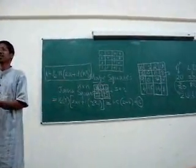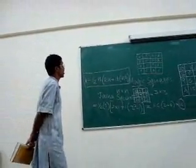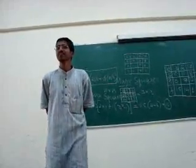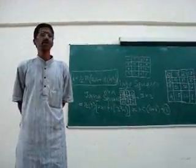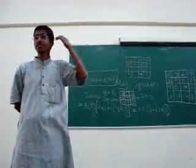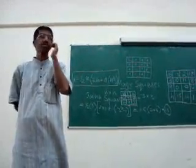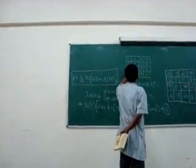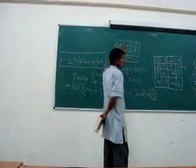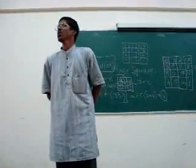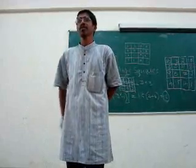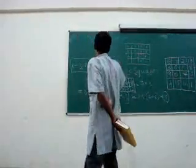The sum in this case is 18 whether it is rows, columns, or diagonals — the diagonal is also 18. This is one kind of magic square where even numbers of rows and columns are used.